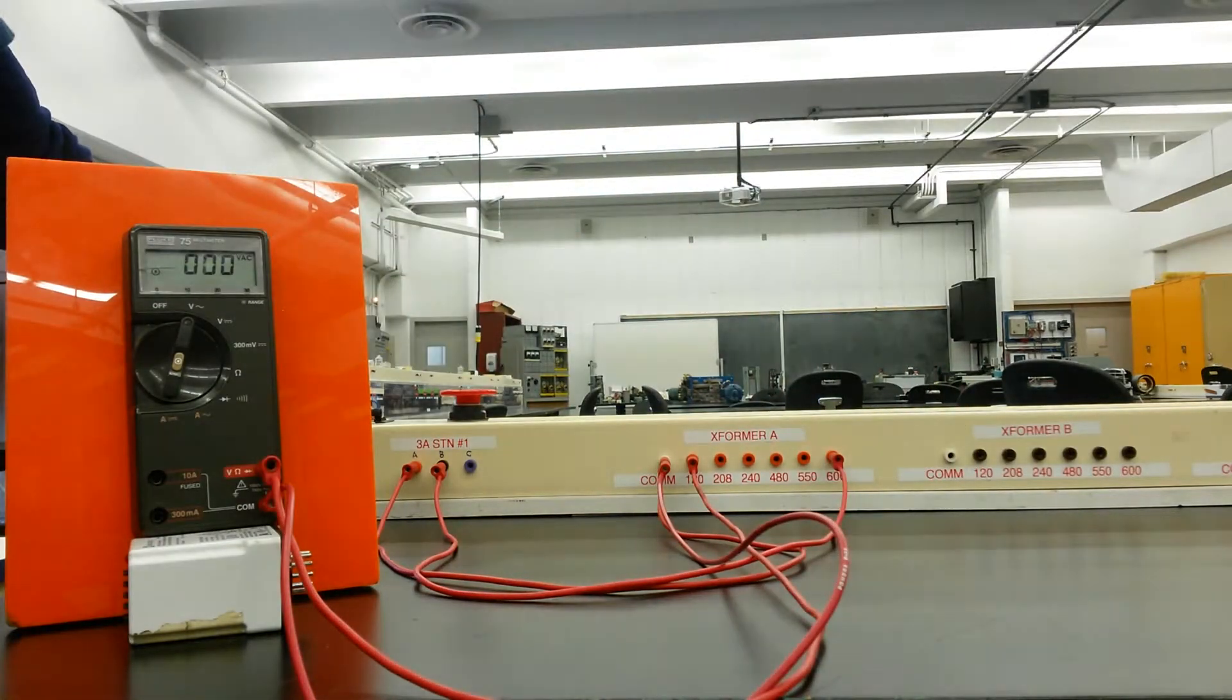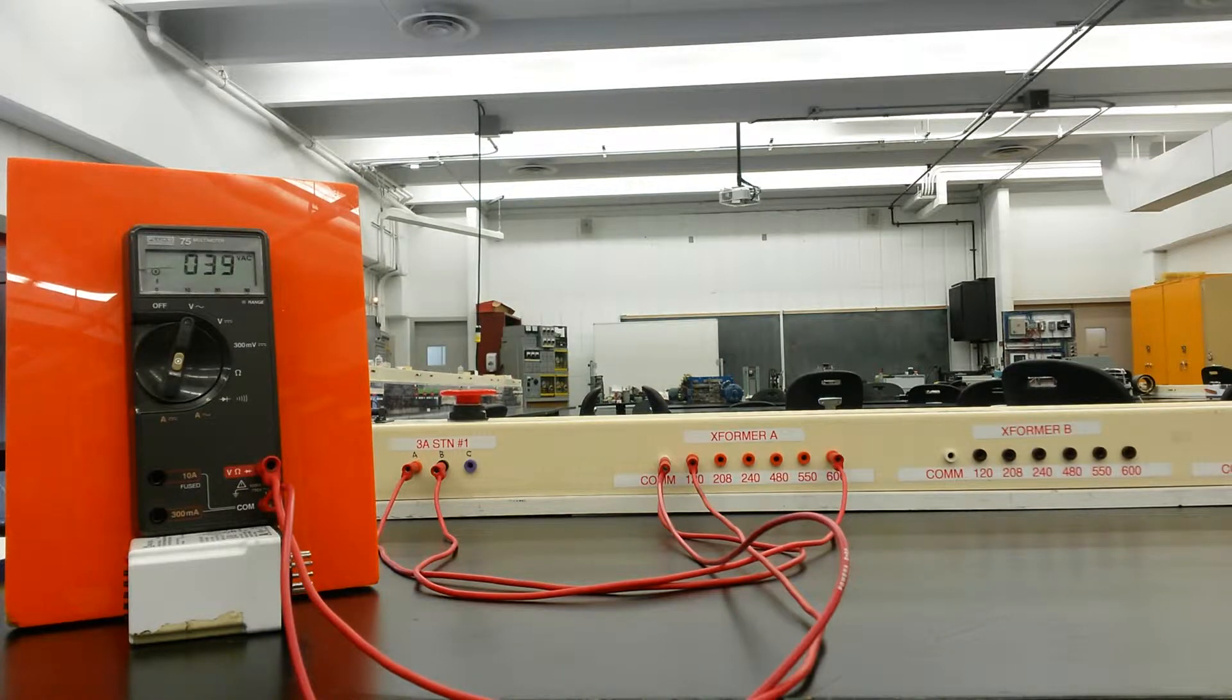If I put 2.8 into 600 volts, I've now changed everything and I only have now 40 volts available between the common and the 120, because I put 2.8 across a whole whack of turns between the common and the 600. I've changed the ratio of volts per turn for the entire transformer, and now I have a much lower voltage available between the common and the 120.